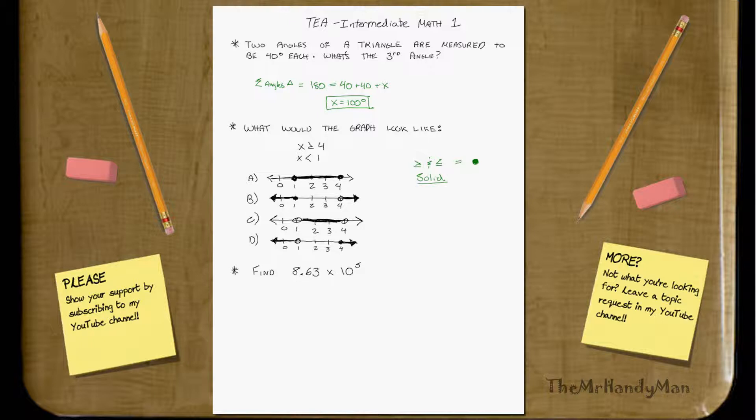Whenever you graph it, that's what that looks like. Whenever you see a greater than and less than, no equal to, just the greater than or less than, that's a hollow dot. So you'll see a nice, hollow circle.